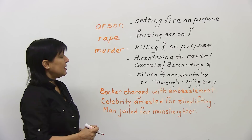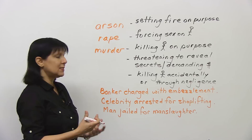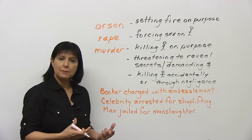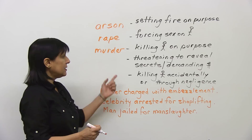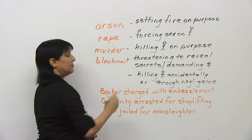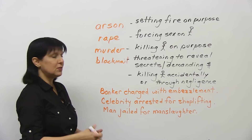This one is the act of threatening to reveal secrets and demanding money in order to keep quiet about those secrets. Sometimes this is in connection with someone who is famous — a politician or something like that. Do you know what that is? It starts with a B, and it's called blackmail. To blackmail someone is to threaten to reveal secrets.